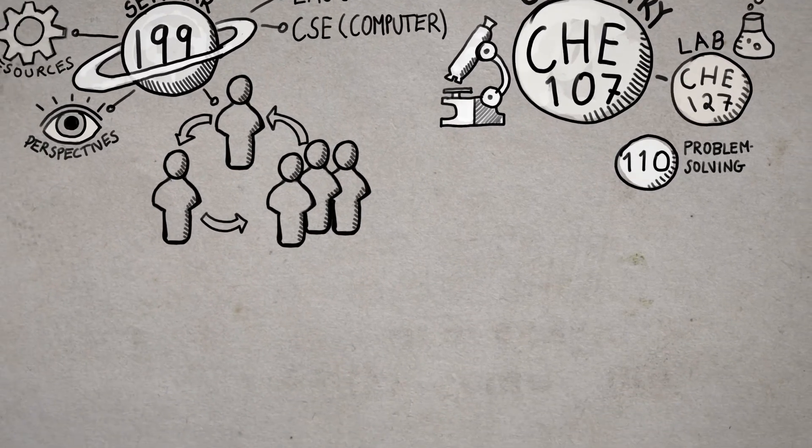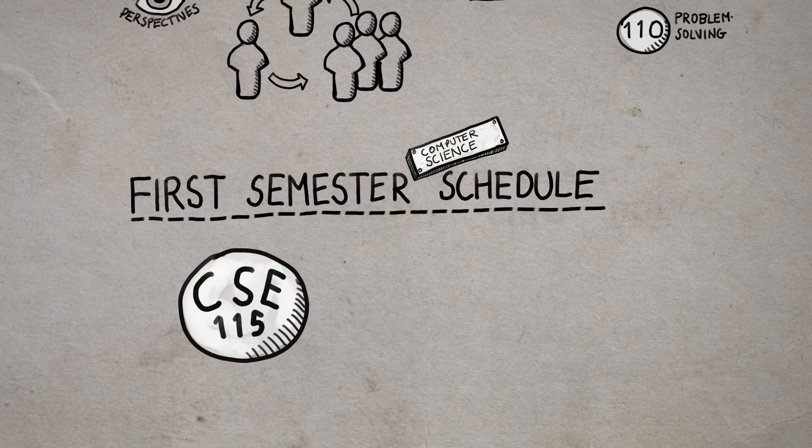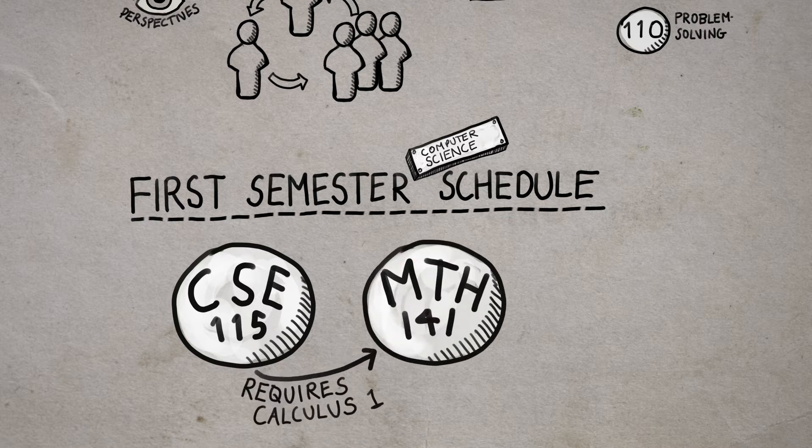Computer Science students have a different schedule, which you can see here with Introduction to Computer Science 1. CSE 115 requires Calculus 1, so if you're not ready for calculus, we'll have an alternative class to replace it on your schedule.